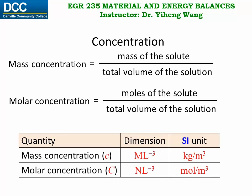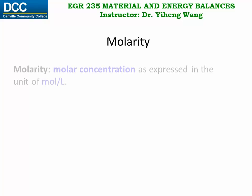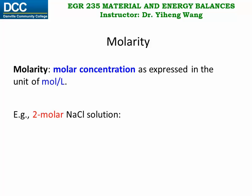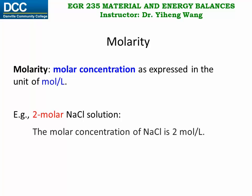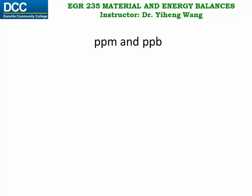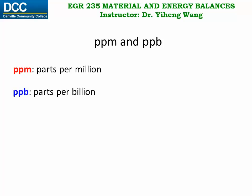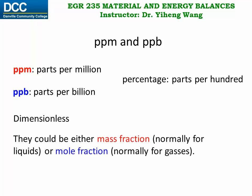Here are the dimensions and SI units for concentration. When molar concentration is expressed in units of mole per liter, it is called the molarity of the solution. For example, a 2 molar sodium chloride solution means the molarity is 2 and the concentration is 2 moles per liter. To describe a very small trace amount of substance, we can use PPM and PPB — parts per million and parts per billion. These are similar to percentage, which means parts per hundred. Like percentage, PPM and PPB are both ratios and therefore dimensionless, and they can represent either mass fraction or mole fraction.